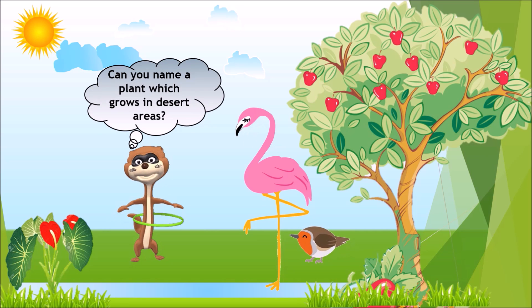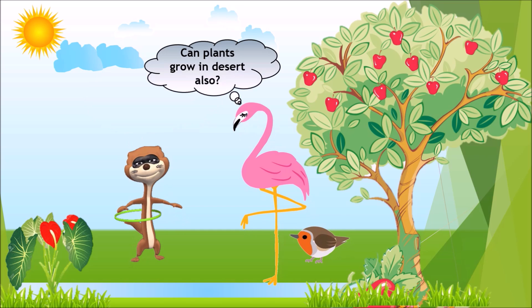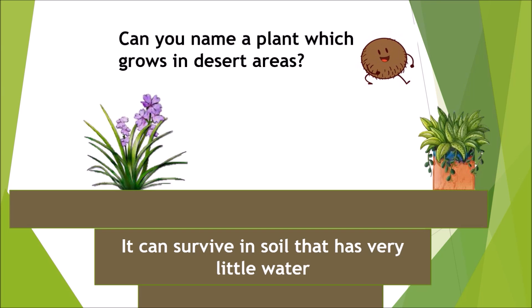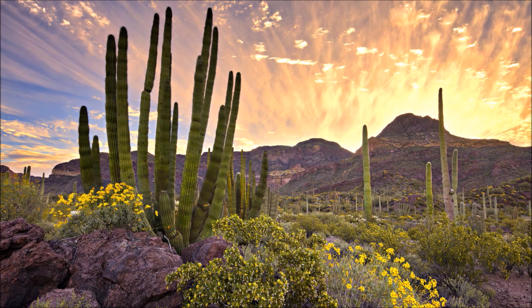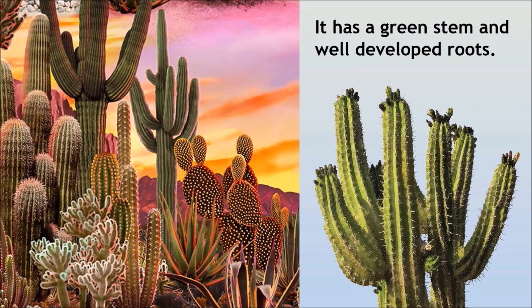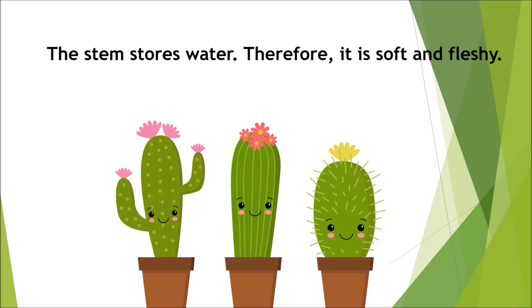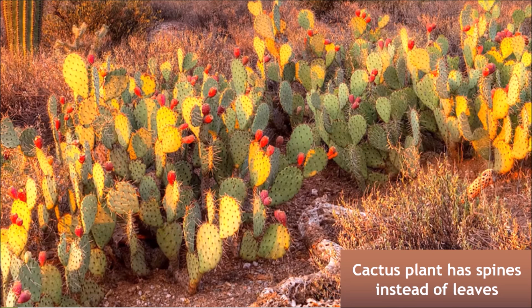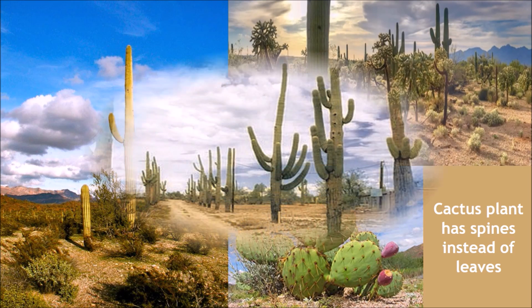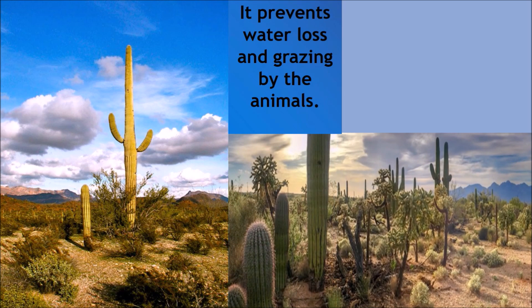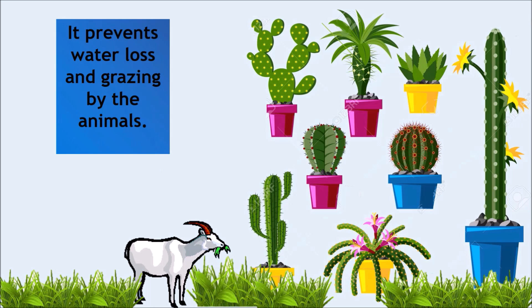Can you name a plant which grows in desert areas? Can plants grow in desert also? Cactus grows in a desert. It can survive in soil that has very little water. It has a green stem and well developed roots. The stem stores water, therefore it is soft and fleshy. Cactus plant has spines instead of leaves, which prevents water loss and grazing by the animals.